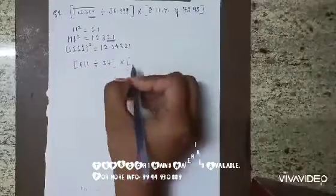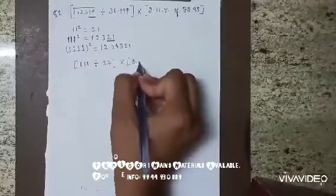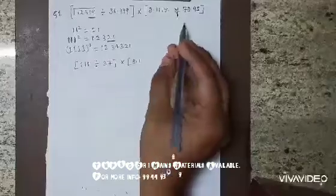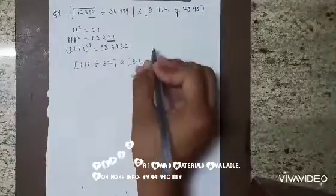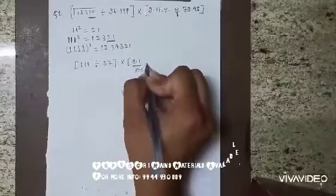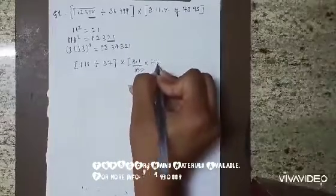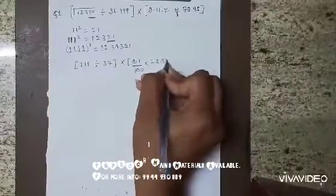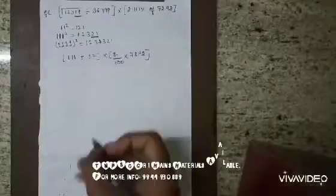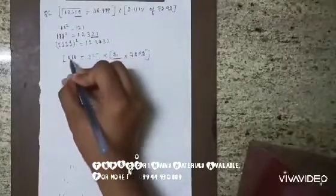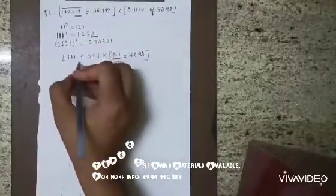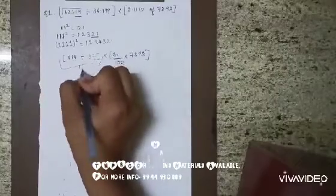Now, can you write it as 8.1 percent by 100 into 78.98? Now you see 37, 3 is 111, so the whole bracket is 3.